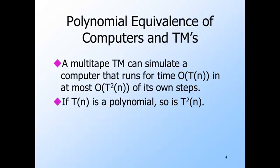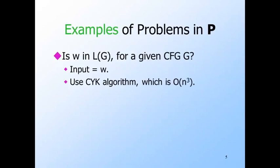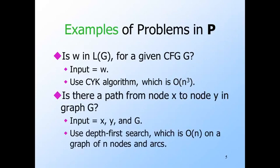When simulating a program it's best to simulate a Turing machine, but when devising an algorithm it's best to think about a computer program. Here are two examples of problems in class P. For each context-free grammar G, there is the CYK algorithm that takes an input string W and tells whether W is in the language, running in O(n^3) time. The second problem is finding a path in a graph: given a directed graph with a source node X and a sink node Y, the answer is yes if there is a path from source to sink. Graphs must be coded in a finite alphabet.